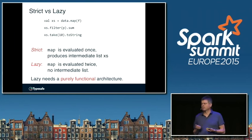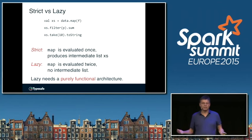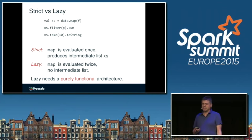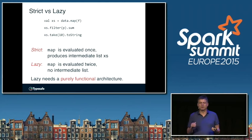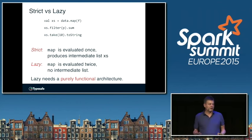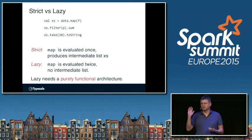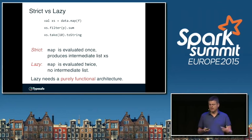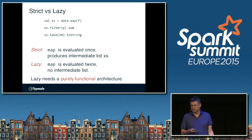Laziness gets very confusing when mixed with side effects — there's a paper by Erik Meijer that argues this point very strongly. To be predominantly lazy, you want a purely functional architecture with basically no side effects. That's the use case of Spark — there are no side effects typically; it is a purely functional architecture. So laziness makes a lot of sense. For a simple map operation in a Scala program, strict is actually better, because you want the result directly. But in Spark you always have more involved queries, so the laziness makes a lot of sense for optimization.